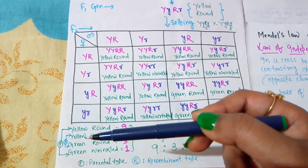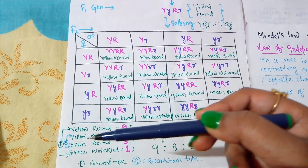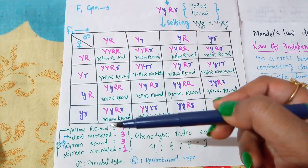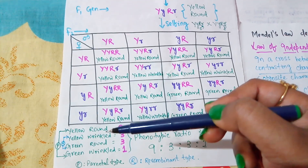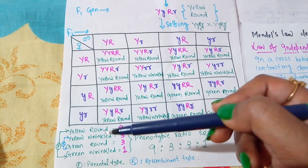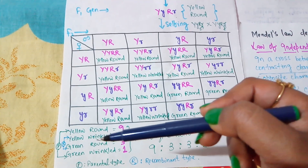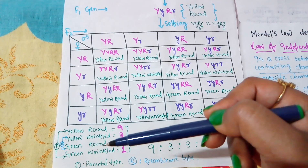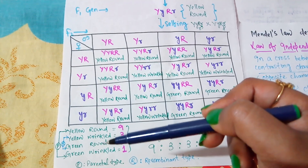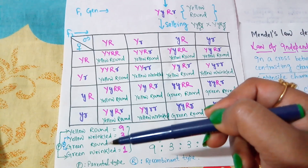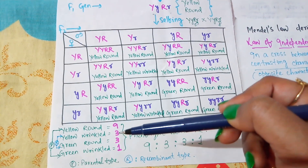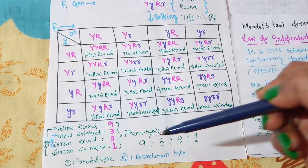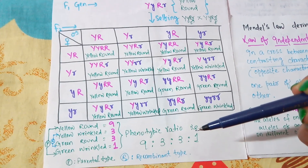Likewise, two new recombinant combinations are also produced. One is yellow wrinkle and the other is green round. In the parental type, yellow was combined with roundness, but in the recombinant form, yellow combines with wrinkleness to form yellow wrinkle, and green combines with roundness to form green round. These are the two new recombinant forms, and their numbers are 3 and 3. So the total phenotypic ratio is 9:3:3:1.